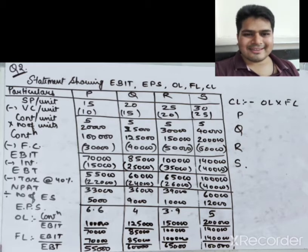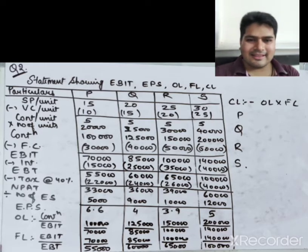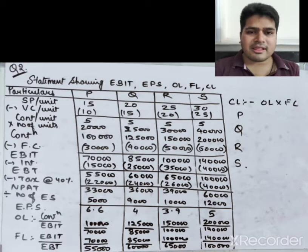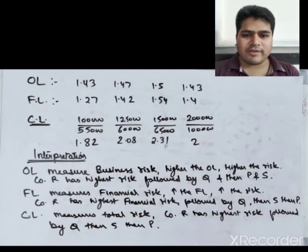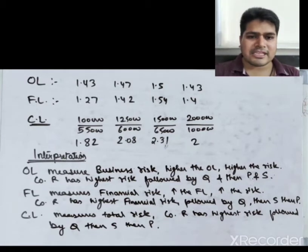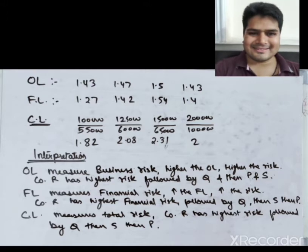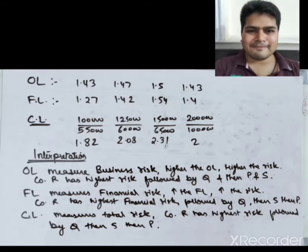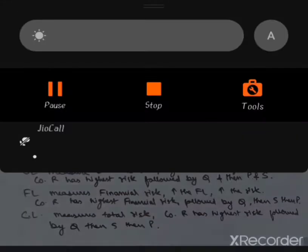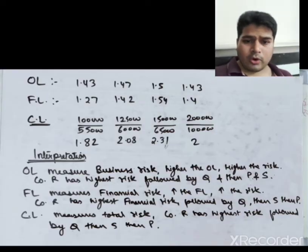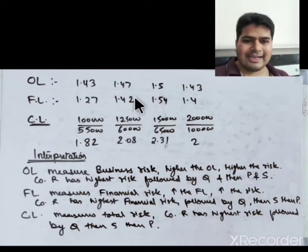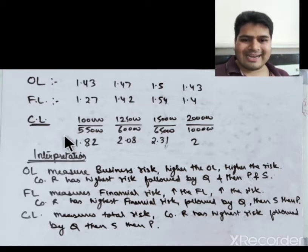The question also asks to interpret the results. When we have calculated OL, FL, and CL for all four companies P, Q, R, S, we get the same results. Now for the interpretation — interpret means to comment on the values.